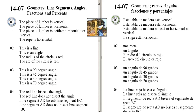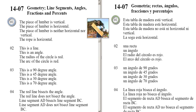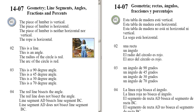The piece of lumber is vertical. The piece of lumber is horizontal. The piece of lumber is neither horizontal nor vertical. The rope is horizontal.